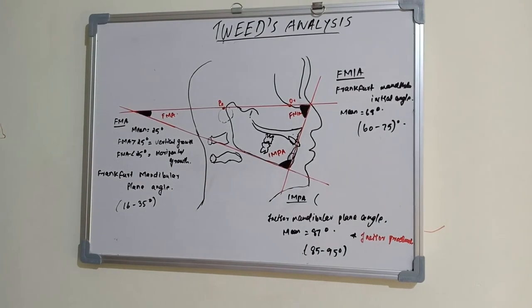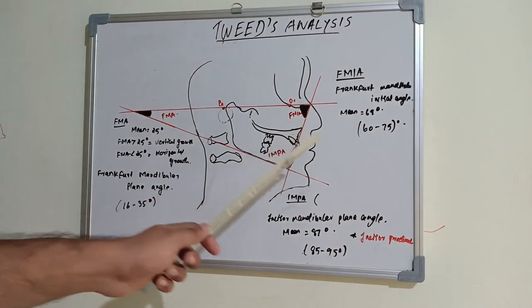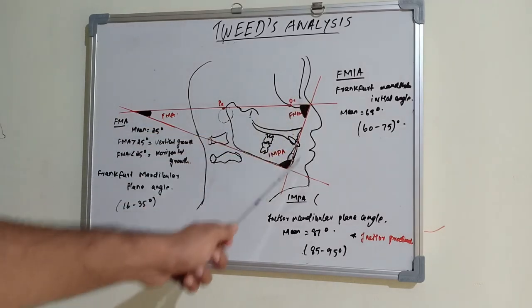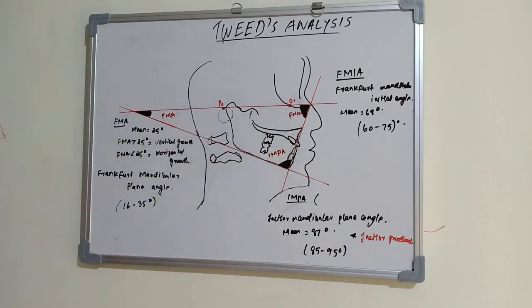The next one is Incisor Mandibular Plane Angle. It is joined by the mandibular plane and the lower incisor long axis, which indicates the upright position of mandibular incisor is normal or not, or the balance and harmony of lower facial profile. The mean angle is 87 degrees. It ranges from 85 to 95 degrees.